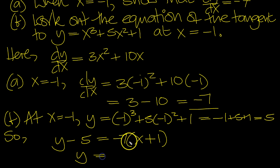So y equals, expand the bracket: minus 7x minus 7. Then move the minus 5 over to be plus 5, so that equals minus 7x minus 2.